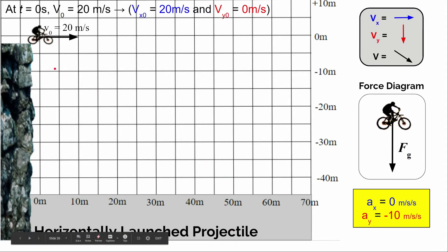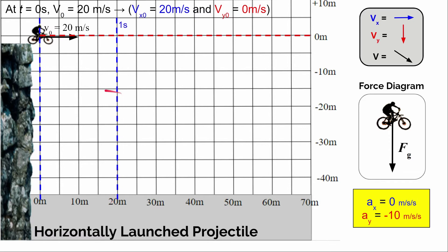Let's take the case where somebody's on a mountain bike and they ride off of a cliff, and at the moment they leave the cliff, they're moving at 20 meters per second. We know that horizontally they're going to keep that same speed — they're going to keep moving forward at 20 meters per second. So one second later they're going to be 20 meters in front of the cliff, assuming they're still moving through the air. Two seconds later they'll be another 20 meters forward, so 40 meters in front of the cliff. And three seconds later, because their horizontal velocity stays constant, they're going to be 60 meters in front of the cliff.